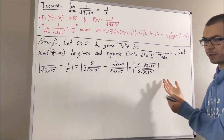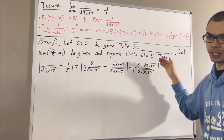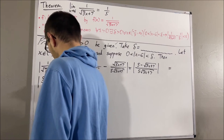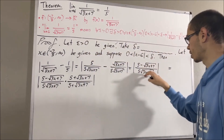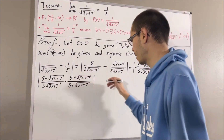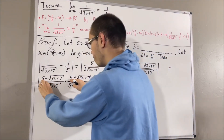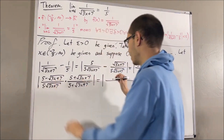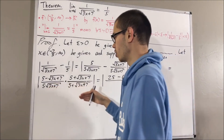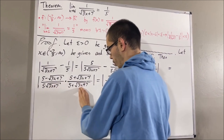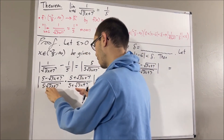What should we do from here? Let's multiply this expression by 5 plus the square root of 3x plus 7 over 5 plus the square root of 3x plus 7. We essentially just multiplied by 1, so we're perfectly fine. In the numerator, we're really doing 5 squared minus square root of 3x plus 7 squared, which leaves us with 25 minus 3x plus 7. In the denominator, we're doing this expression times 5 plus the square root of 3x plus 7, leaving us with 25 times the square root of 3x plus 7 plus 5 times 3x plus 7.